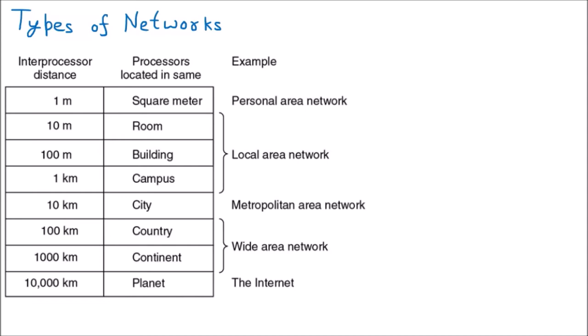Today we are discussing the types of networks. First of all, we are learning which is the smallest network — that is the BAN. BAN stands for Body Area Network, and here some kind of body is involved — obviously the human body.